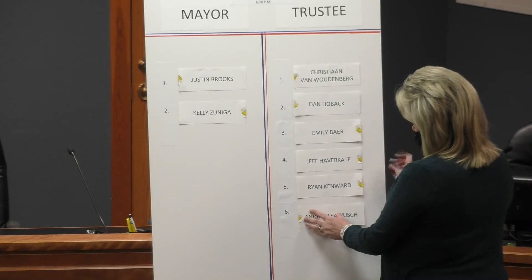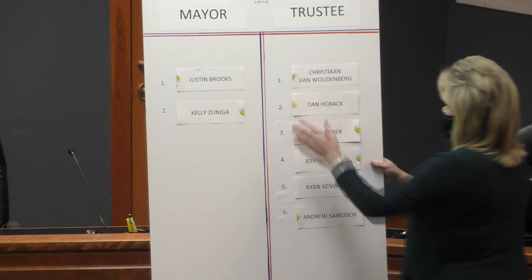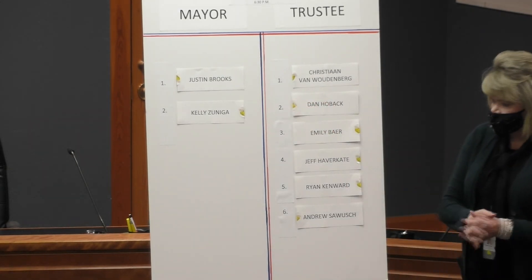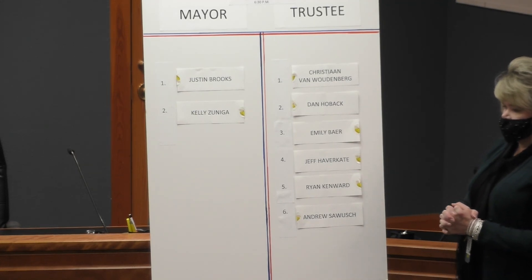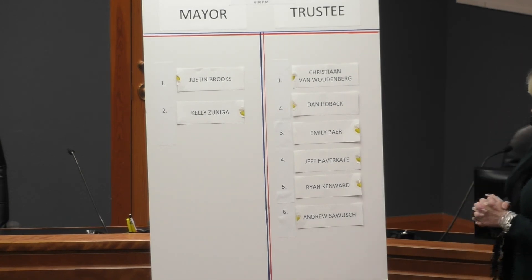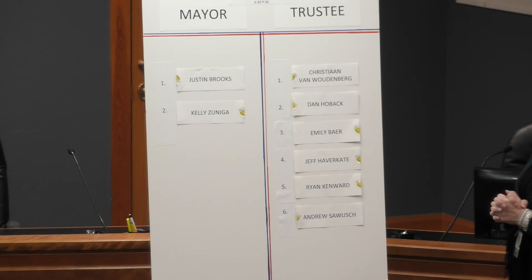I'll read it out loud in case they're not able to read it on the screen. For the position of mayor, the first name is Justin Brooks, followed by Kelly Zuniga. As for trustee: first is Christiane van Wudenberg, second is Dan Hoback, third is Emily Baer, fourth is Jeff Haverkate, fifth is Ryan Kenward, and sixth is Andrew Sowett. I will email you the results, and this will be up on the website tomorrow. If you have any questions, please let me know.